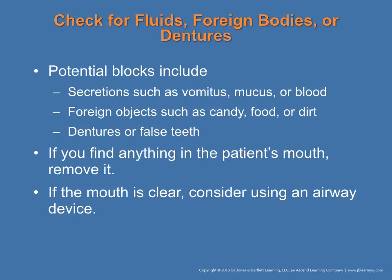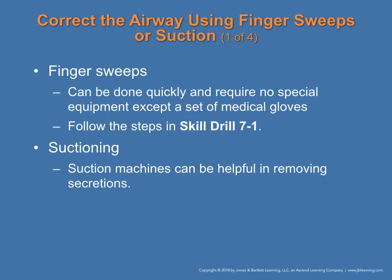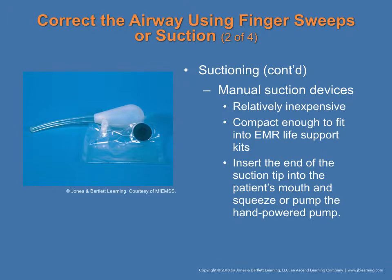Next, think about what can be blocking the airway: vomiting, mucus, blood, a piece of candy, food, dirt, or even teeth can be a cause of blockage. If you see something in the patient's mouth, remove it. If you do not see anything, do not go digging in there. This is called a finger sweep, and it can be done quickly — all you need is gloves. There are also suctioning materials you might have in your kit for fluid, mucus, and blood.